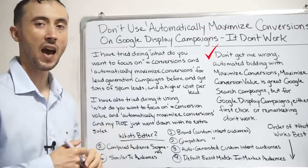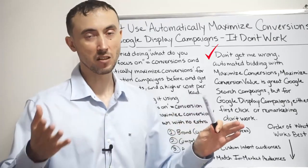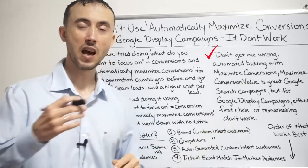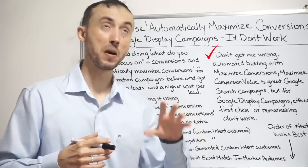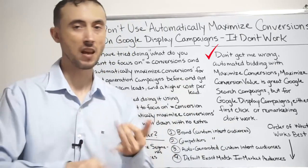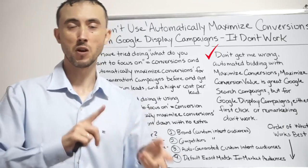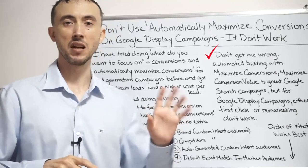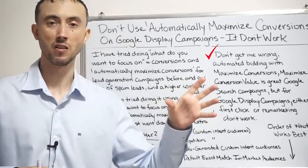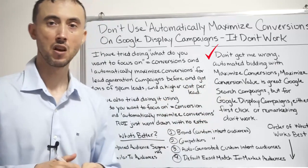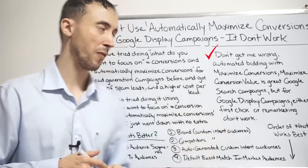Specifically, we still do bid adjustments on time of day, day of the week, gender, age, and parental status — because that helps in addition to automated bidding on search campaigns, which I should make a separate video about.